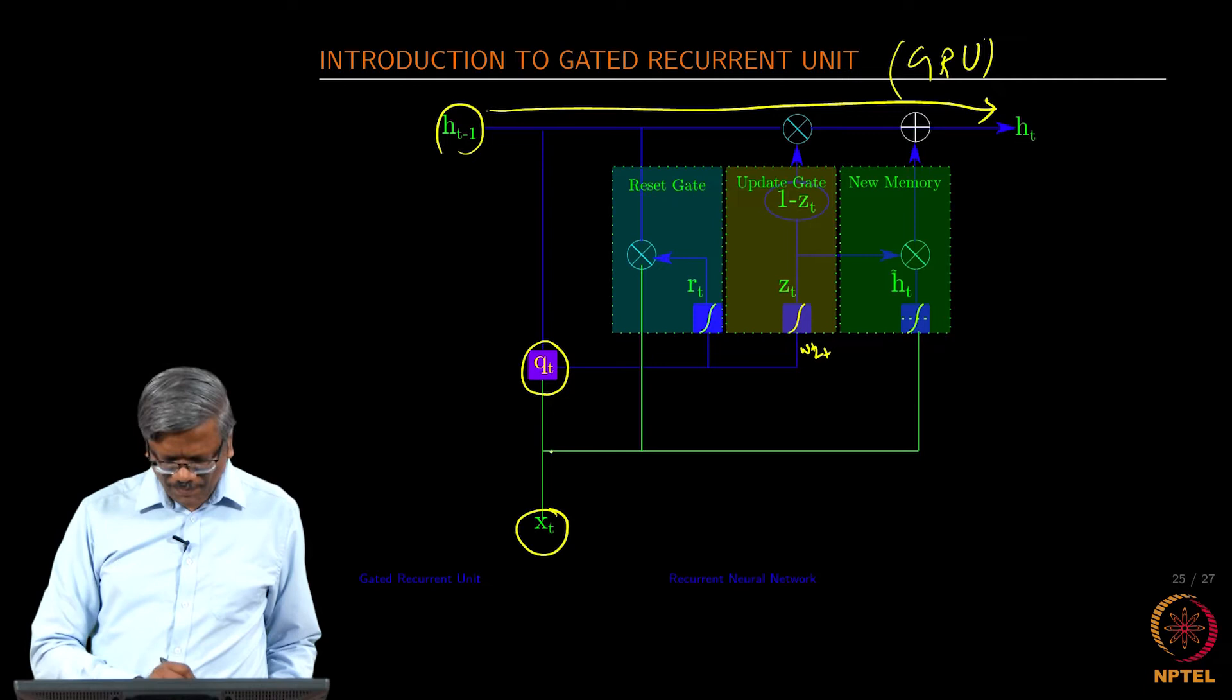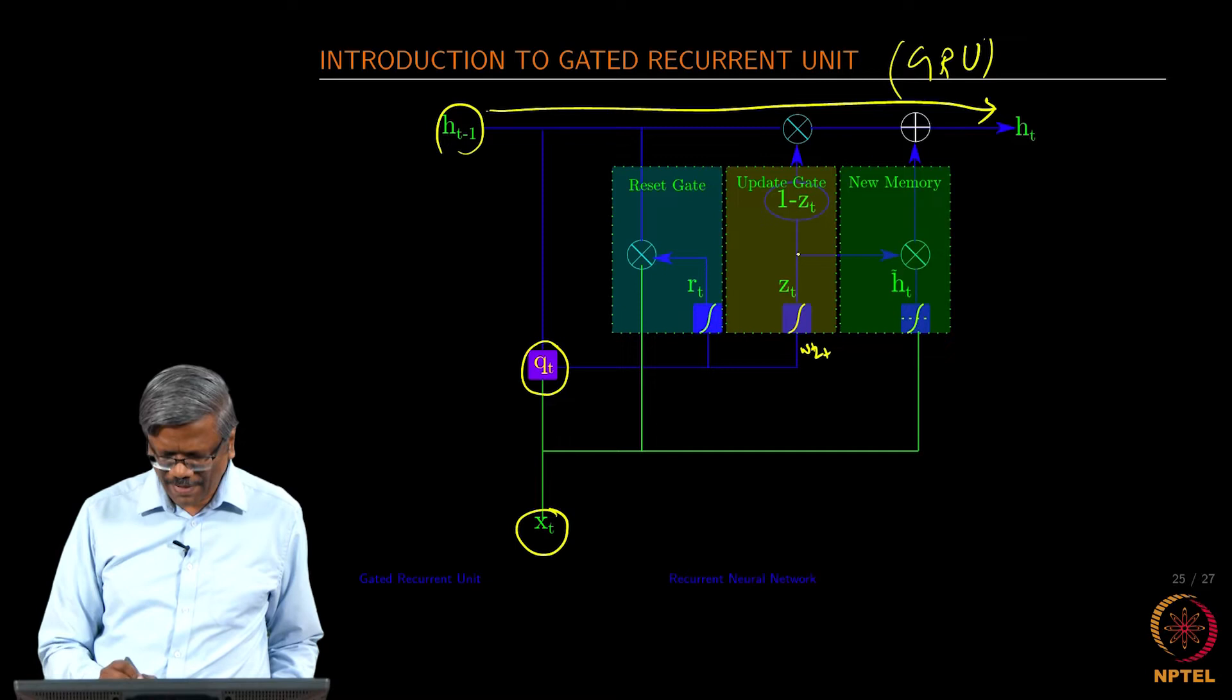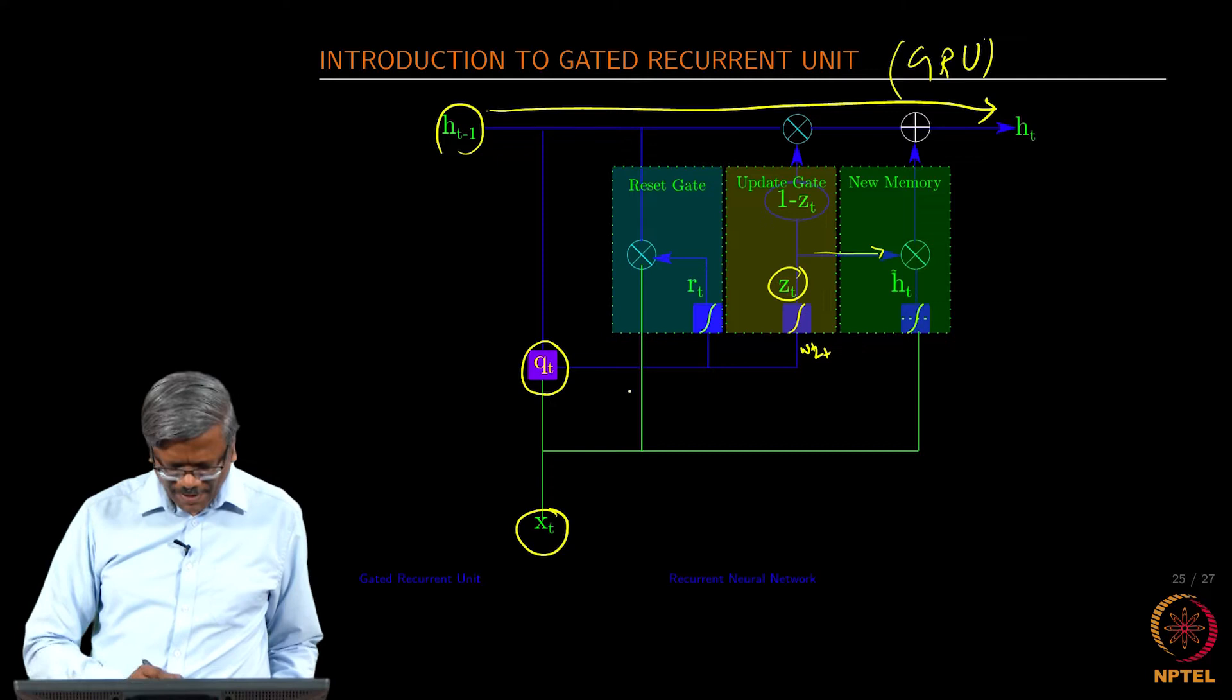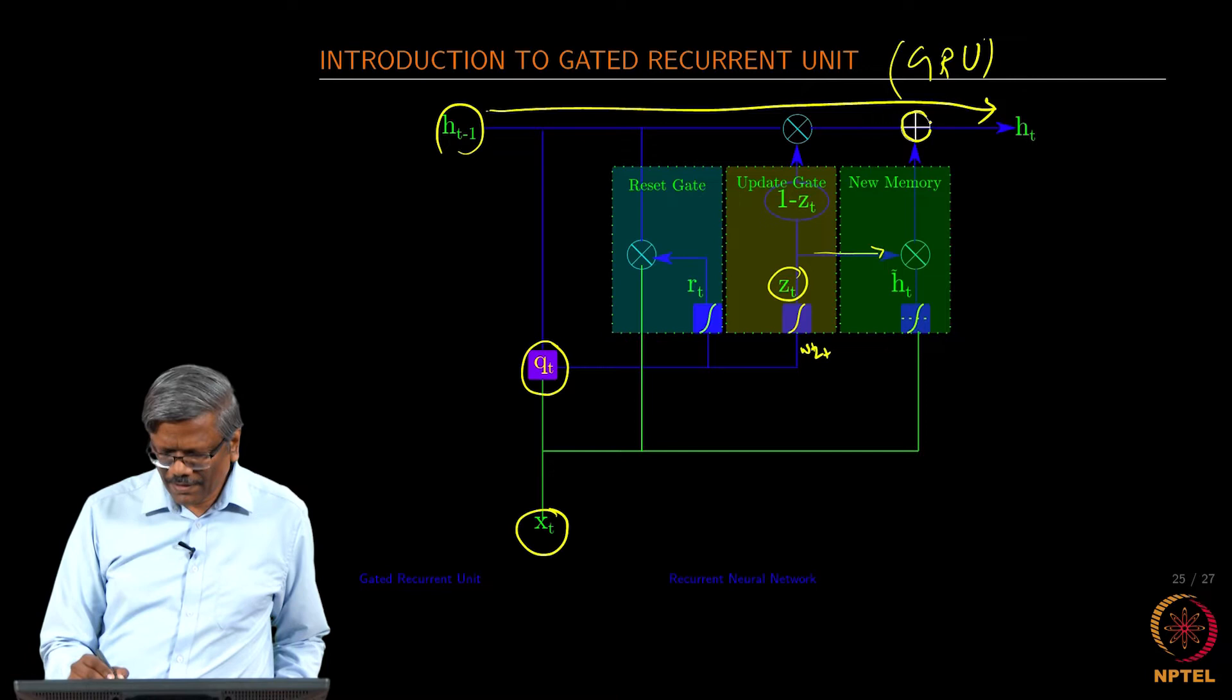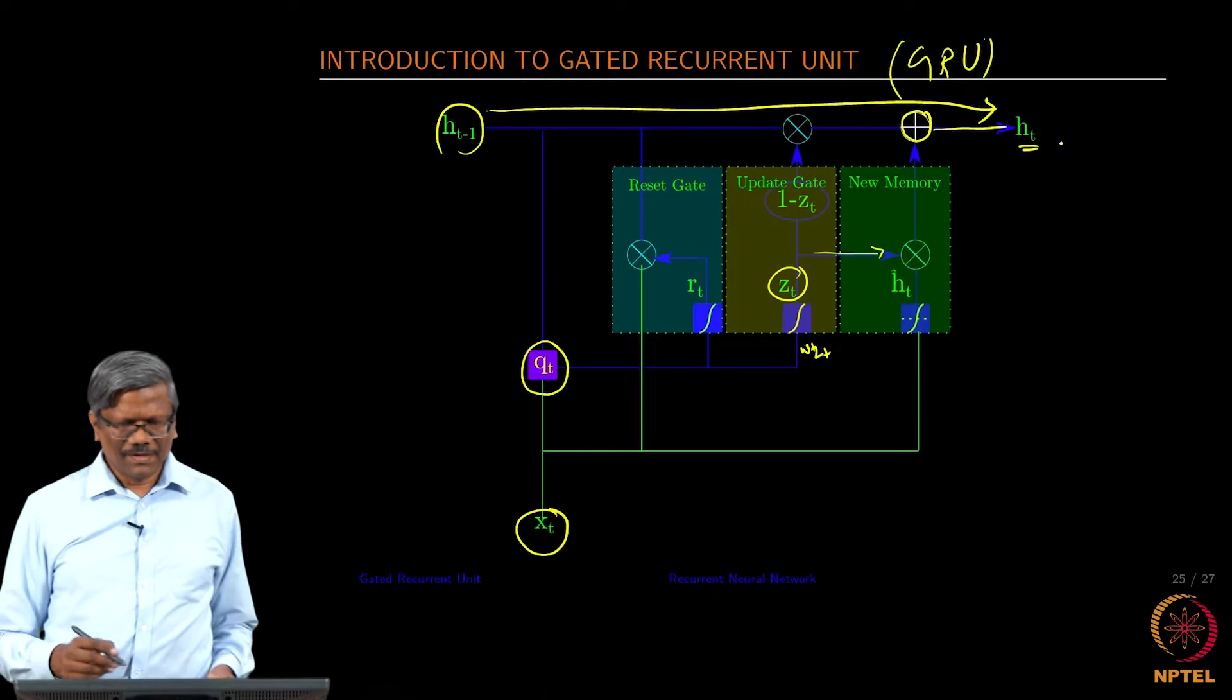And then we have another new memory that is computed which takes the value from z_t and then it takes the value from the reset gate, and finally does an element-wise addition to create h_t there.